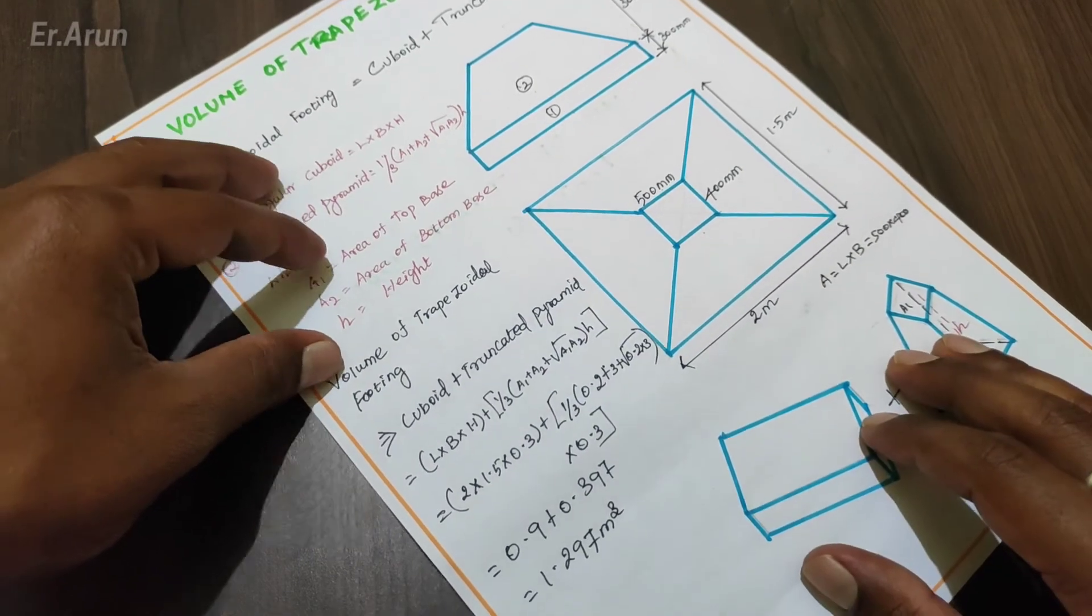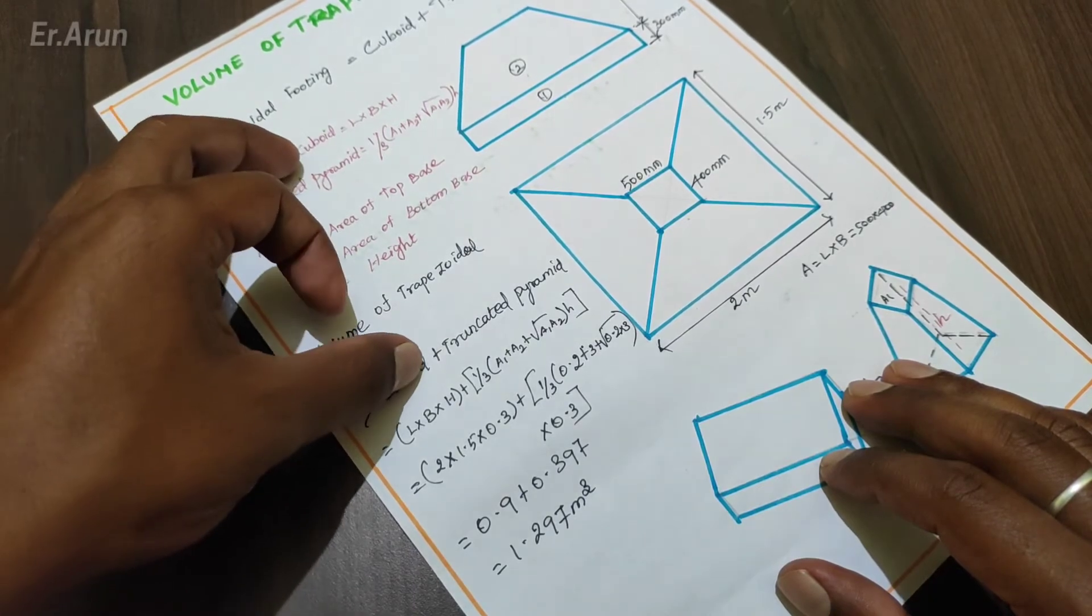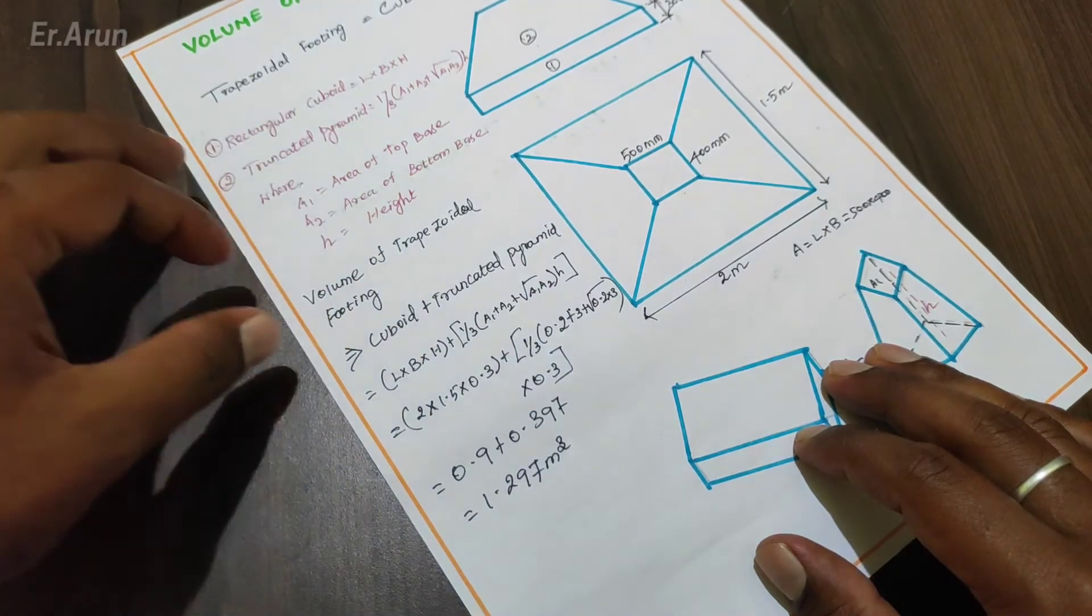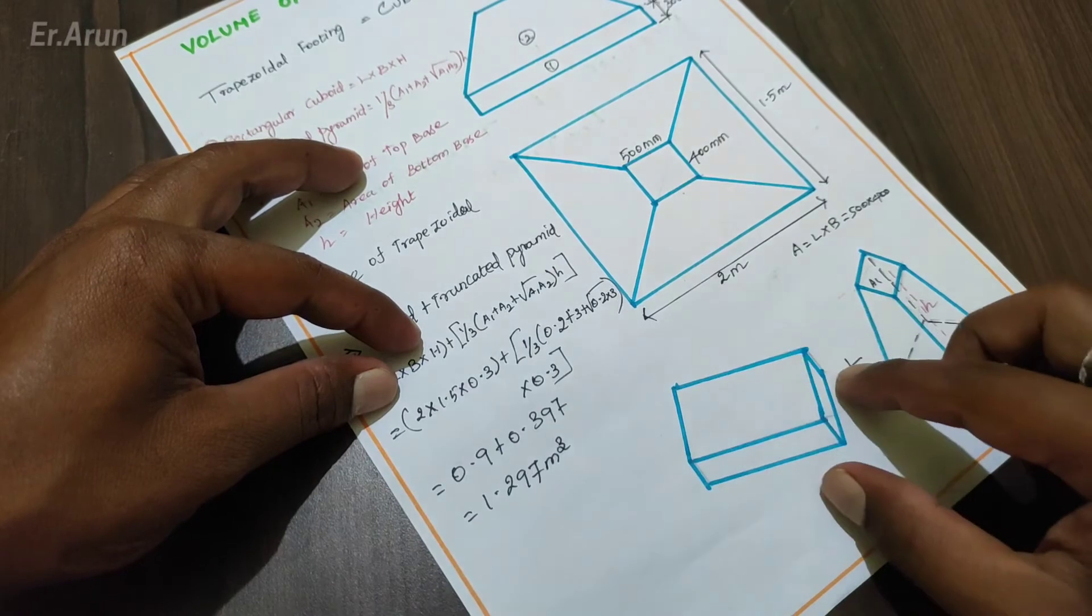Let's give an answer. The value of trapezoidal footing equals cuboid plus truncated parameter. Here we have the formula. We can apply the values. Let's look at the cuboid.